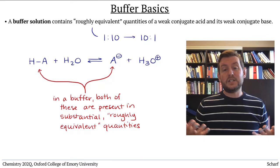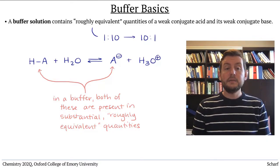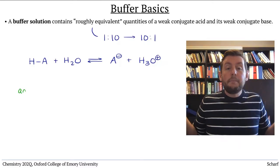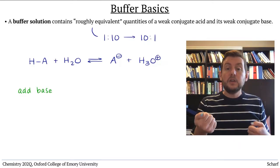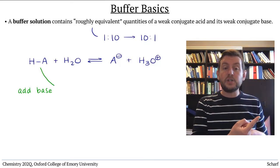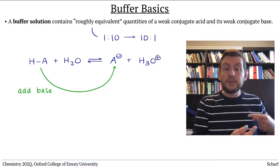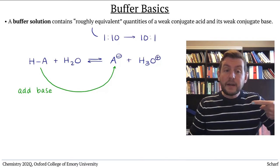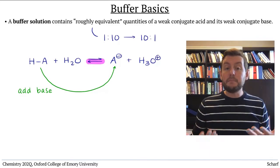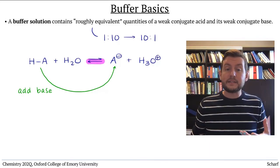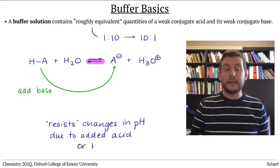They resist changes in pH from added acids or bases because when you add, say, a base, it reacts with some of the conjugate acid, turning it into the conjugate base. And by Le Chatelier's principle, this system compensates by reforming some of the conjugate acid, shifting back toward the reactants. This dampens the effect of adding an acid or a base.